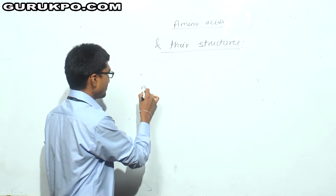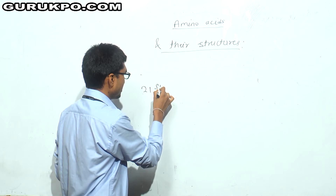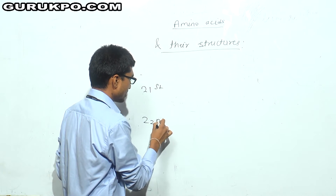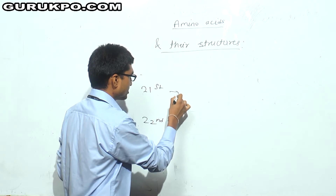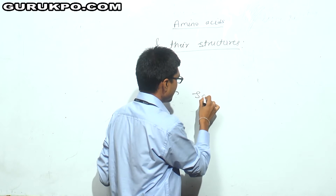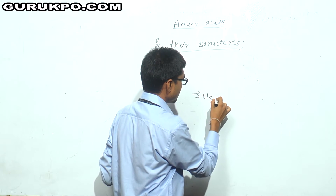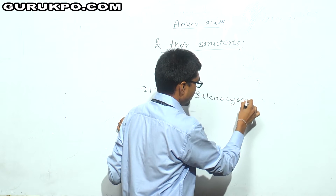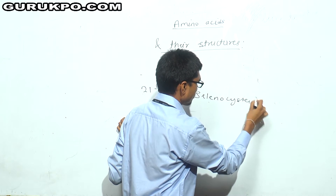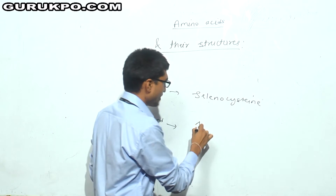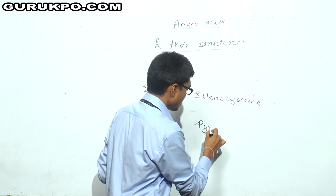Which one is the 21st amino acid and which one is the 22nd amino acid? The 21st amino acid is selenocysteine and the 22nd amino acid is pyrrolysine.